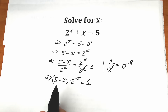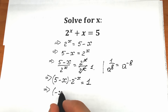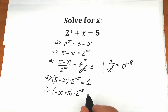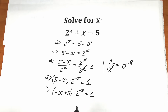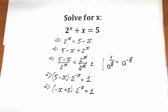Now let's reorder the terms: change the position of minus x and 5, writing it as minus x plus 5. So we have minus x plus 5 times 2 to the power minus x equal to 1. This is absolutely the same thing as 5 minus x.